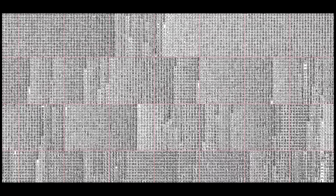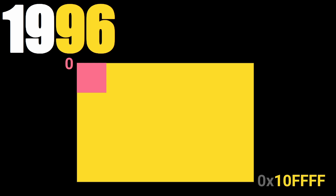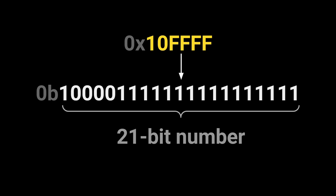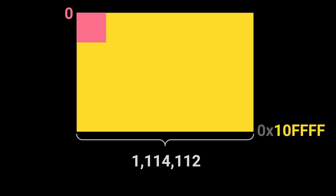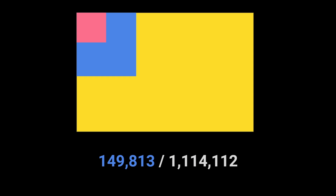But it became clear that 16 bits were not sufficient, and in 1996, the Unicode code space was extended to include integers from 0 to 0x10FFFF, where 0x10FFFF is a 21-bit number. This gives 1,114,112 different possible values. As of Unicode version 15.1, only 149,813 characters exist.